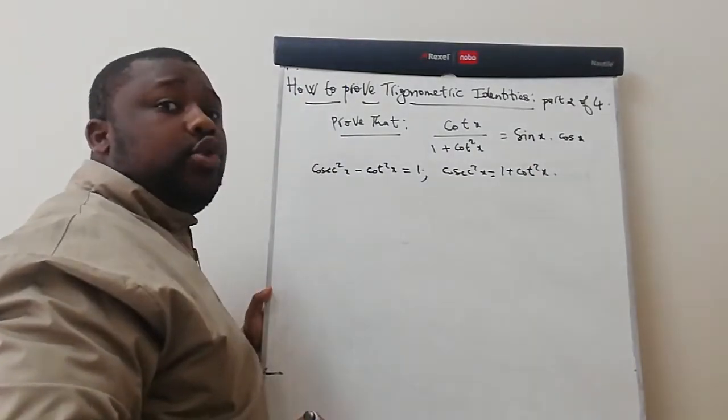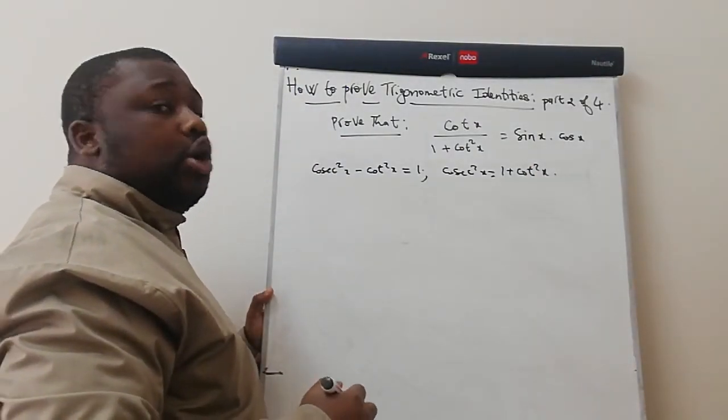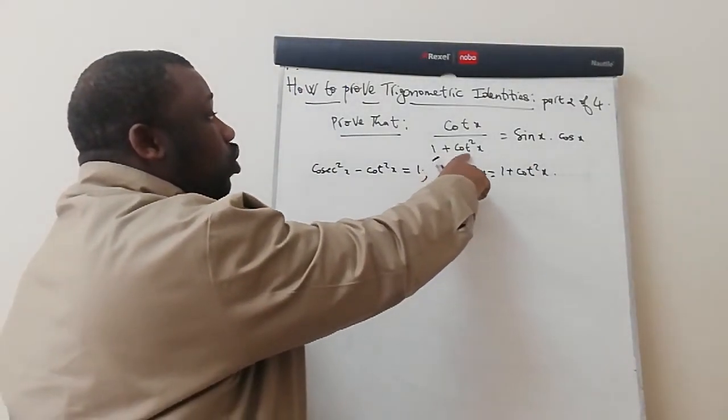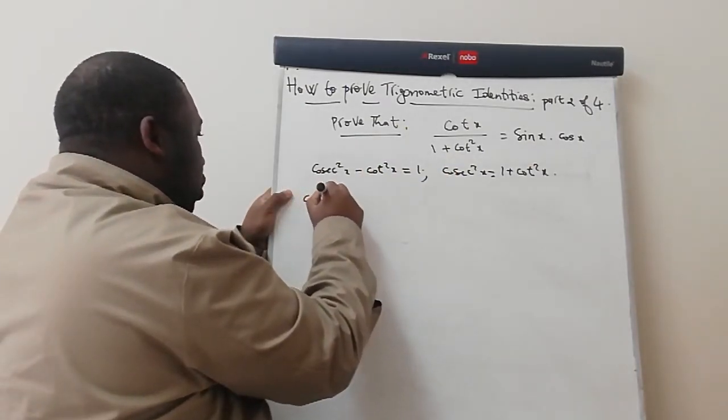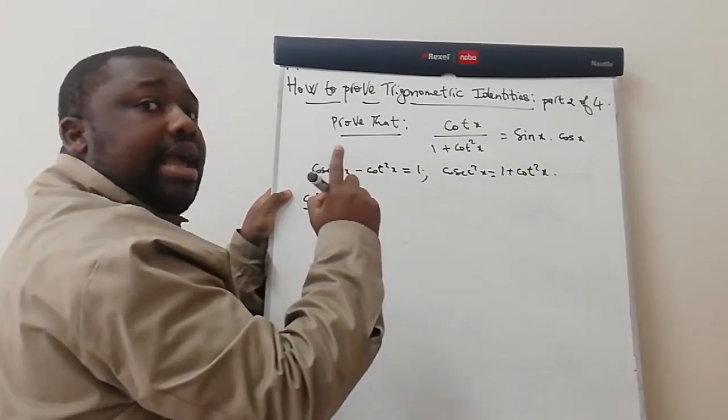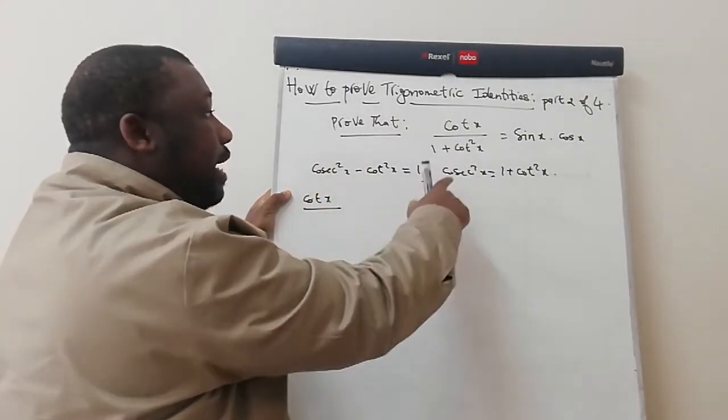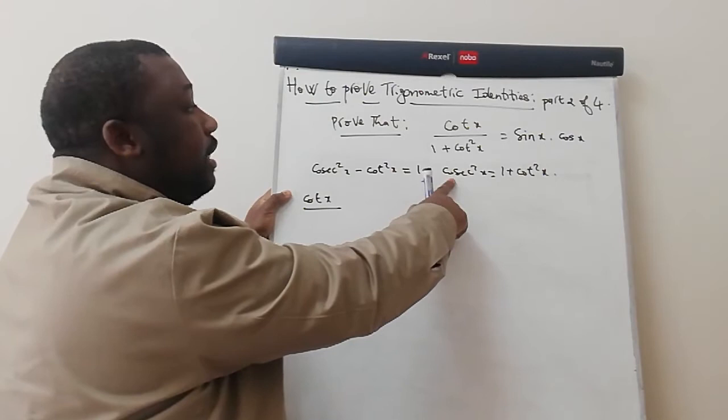The use of doing this is to be able to replace 1 plus cot squared x by cos x squared x. Then from here, we get our cot x over wherever we see 1 plus cot squared x, this must be replaced by cos x squared x.